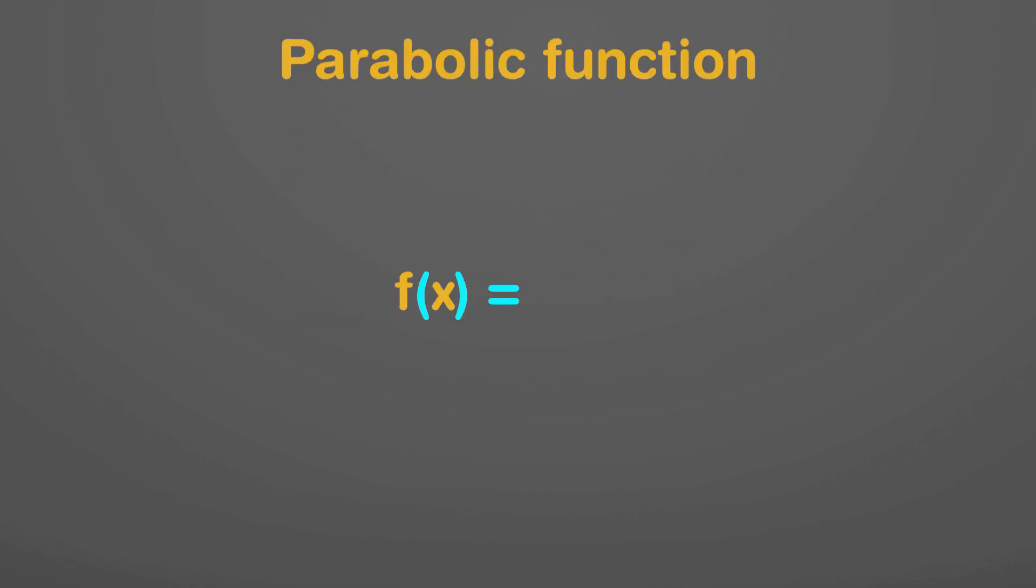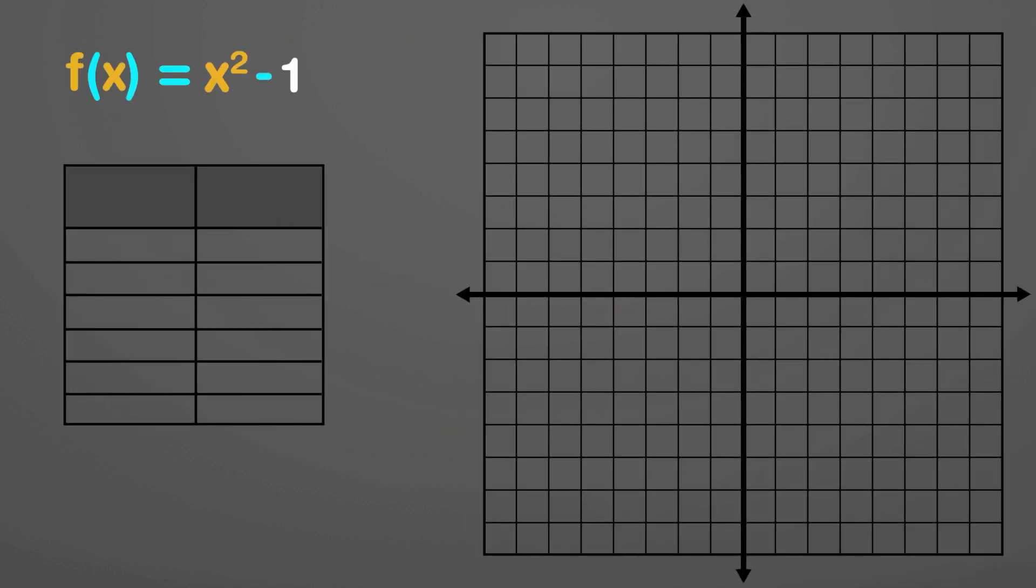Let's say we have a parabolic function f equals x squared minus 1. If we input x as 3, the output f becomes 8.